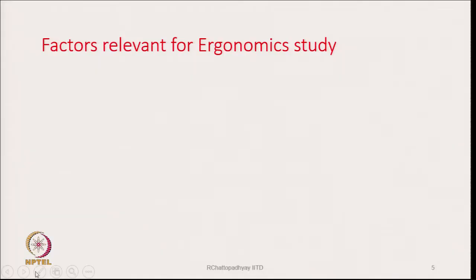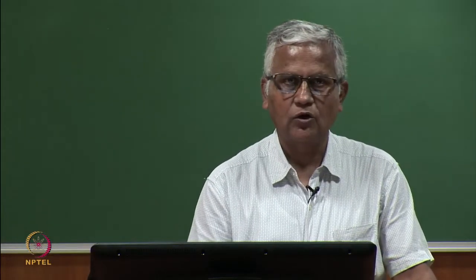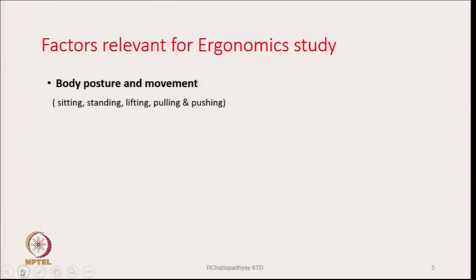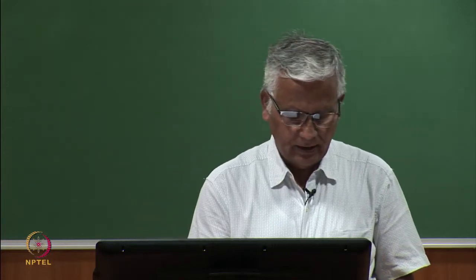The factors relevant for ergonomic study: one is body postures and body movement, which is one relevant factor. This includes sitting, standing, lifting, pulling, and pushing — whatever a person is doing while working. The posture of the body and how the body is moving are important aspects of ergonomic study.